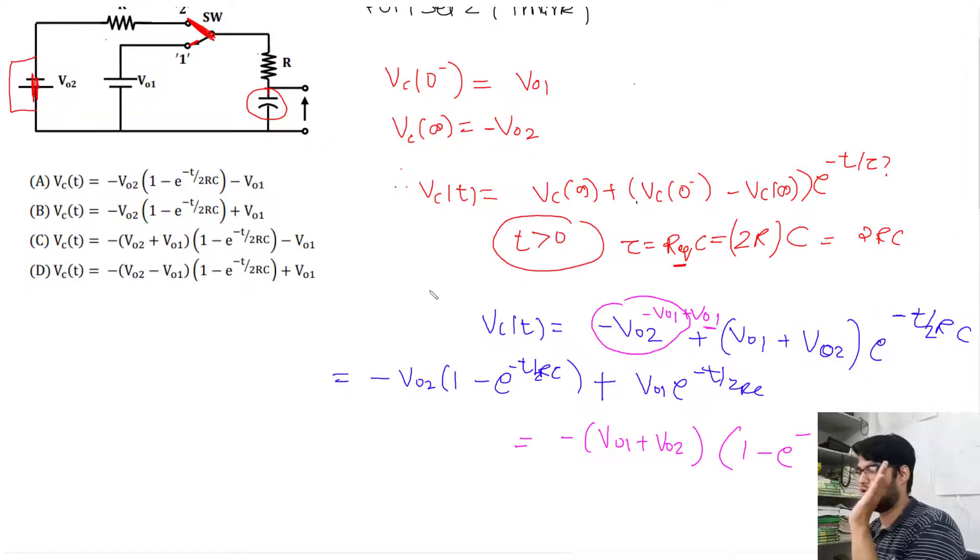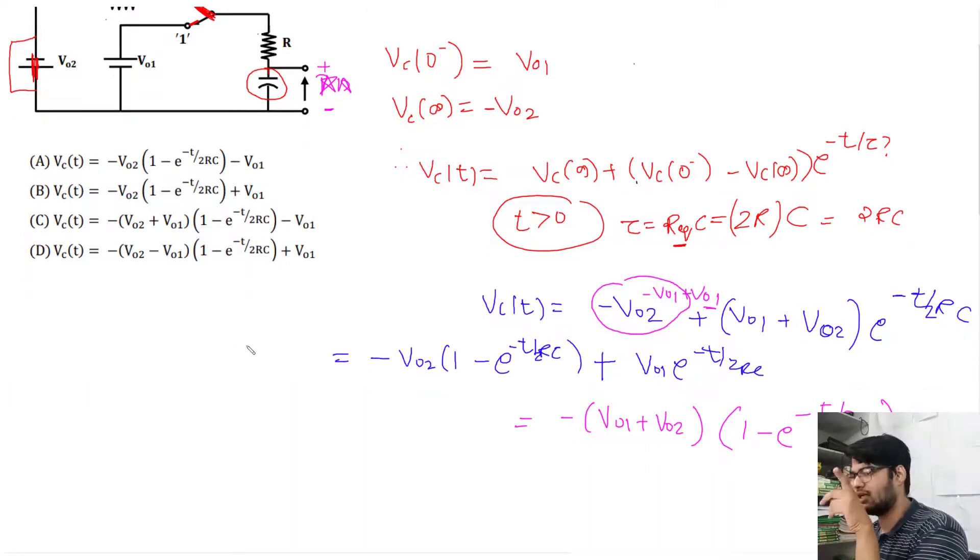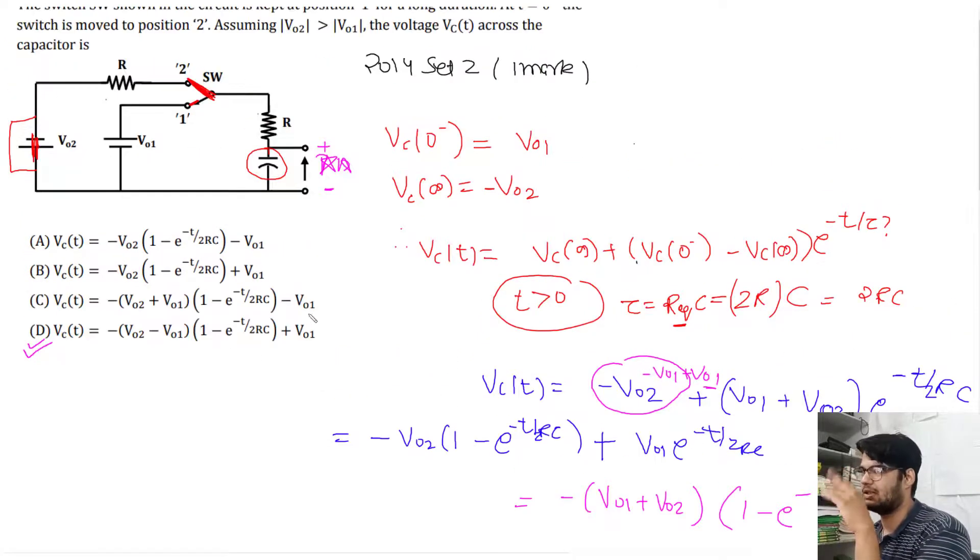According to me, this question is wrong, because the sign they're giving - according to that, plus should be here and minus should be here. That's the polarity we took. In the Made Easy book, they've given a star, meaning it's a bonus or doubtful question.